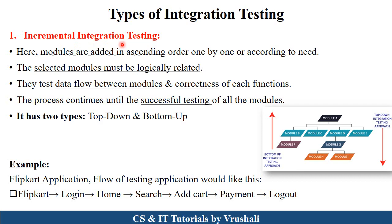The first type is incremental integration testing. Here the tester adds all the modules in the project in ascending order one by one for testing. For example, in a Flipkart application, the user opens Flipkart using the login process, then reaches the home page, searches for a product, adds it to the cart, performs payment, and logs out. In incremental integration testing, the tester checks that this complete process from start to end occurs properly. The tester checks data flow between all modules and their functionality and correctness. This process continues until successful testing of all modules.